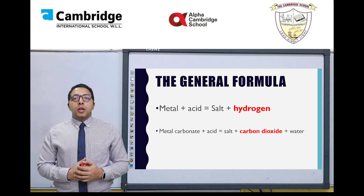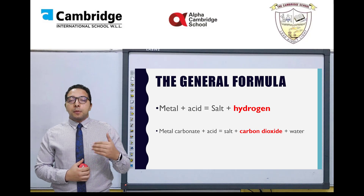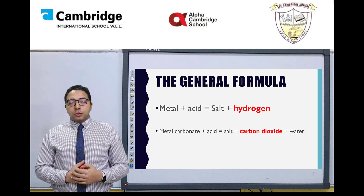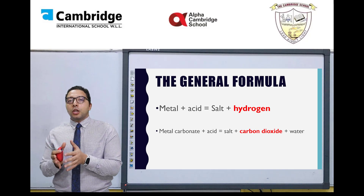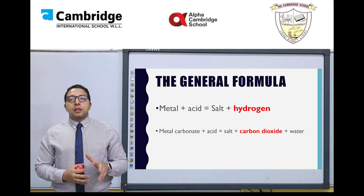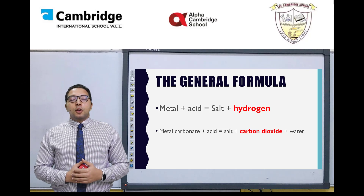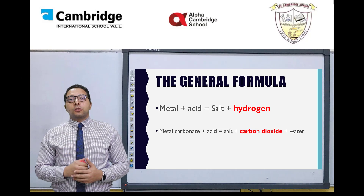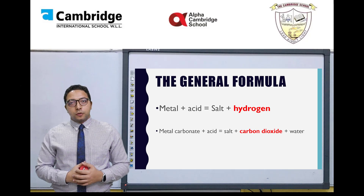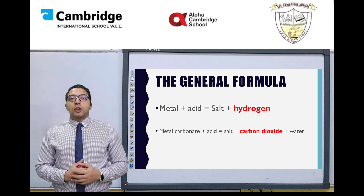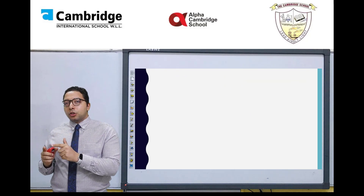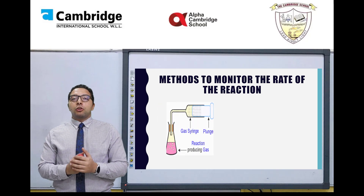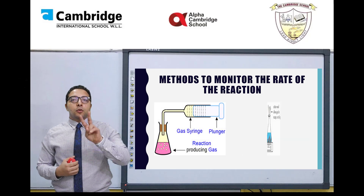Before we jump into it we need first to memorize the general formulas for the reactions of acid. We have metals — when metals react with acid they produce salt along with hydrogen. Hydrogen is highlighted in red because it's the product we're going to monitor to find out the rate of the reaction. In the second reaction, metal carbonate reacts with acid to produce salt, carbon dioxide, and water. Carbon dioxide is also highlighted in red because it's going to be monitored to find out the rate of the reaction.